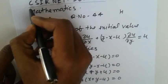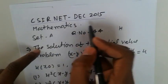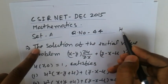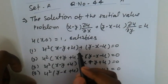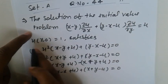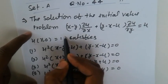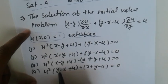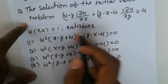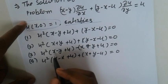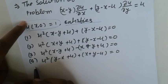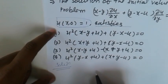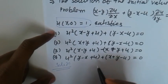The topic is a CSIR exam question — CSIR December 2015 Mathematics, question number 44. We need to find the solution of the given differential equation, where u(x,0)=0 is the boundary condition, and four options are given. The answer is option 3, so let's find the solution.